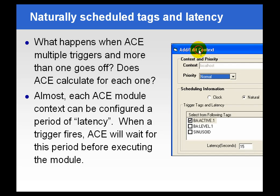Whenever you're in the Add, Edit, Context dialog menu, you may have noticed a Latency section at the bottom, expressed in number of seconds. This Latency is only used if you have two conditions: you have a naturally scheduled calculation, and there are multiple input tags. When there are multiple input tags, the system has to make certain decisions about when to do the calculation based on which tag is firing. This period is referred to as the Latency Period.